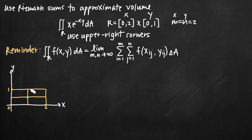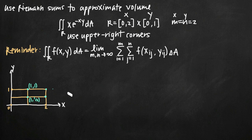The upper right-hand corner of the first rectangle is one point, and the rectangle above it has its upper right-hand corner just above it. For the two rectangles on the right, we have upper right-hand corners there as well. The four coordinate points are: (1, 1/2), (1, 1), (2, 1/2), and (2, 1).